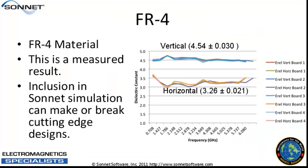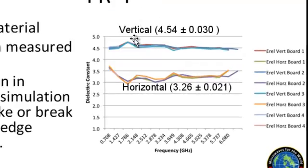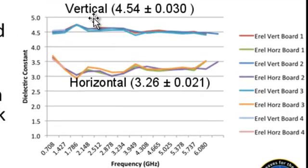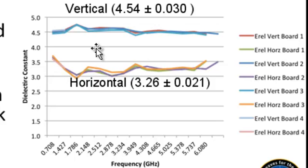This is what the extracted data looks like for FR4 — an actual measured result for a real FR4 board. Inclusion of this data can make or break designs in Sonnet. The vertical permittivity is 4.54, and the horizontal permittivity is 3.26. Those are markedly different values.